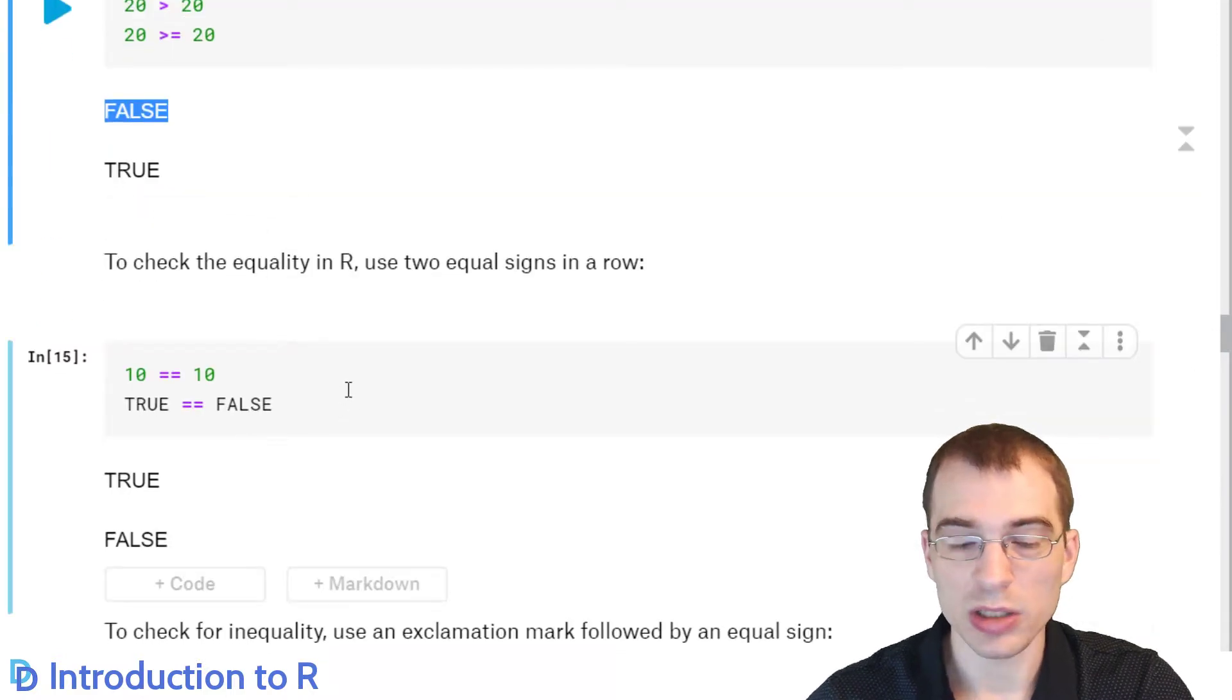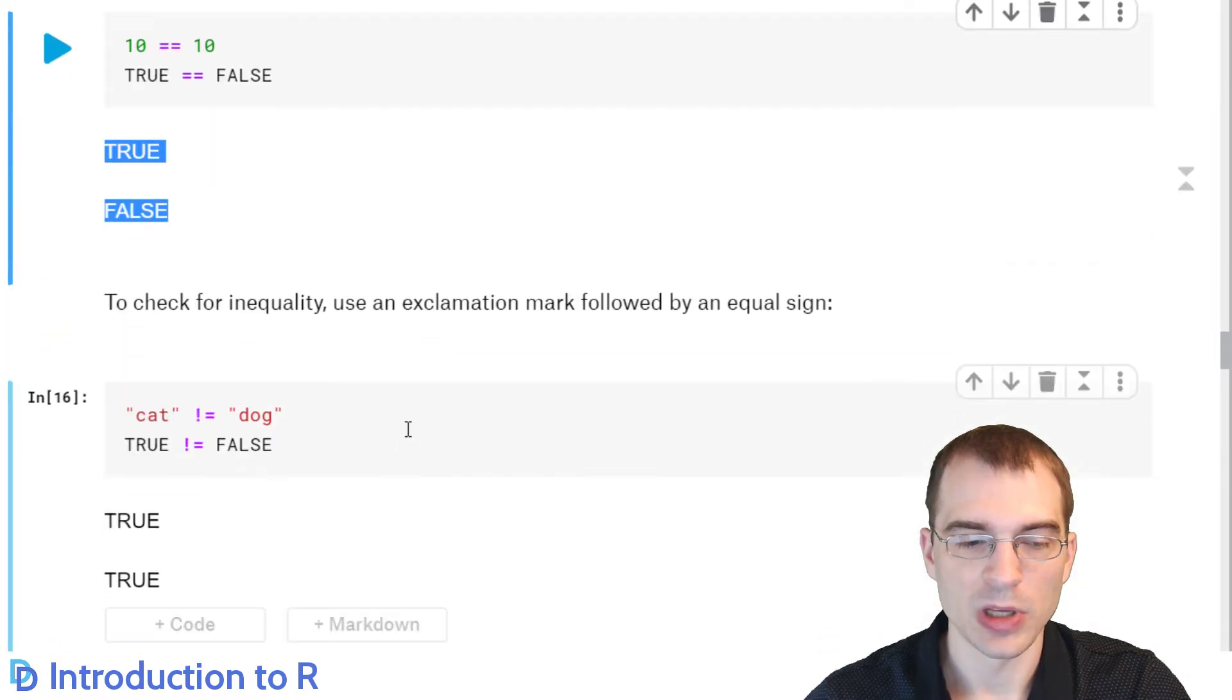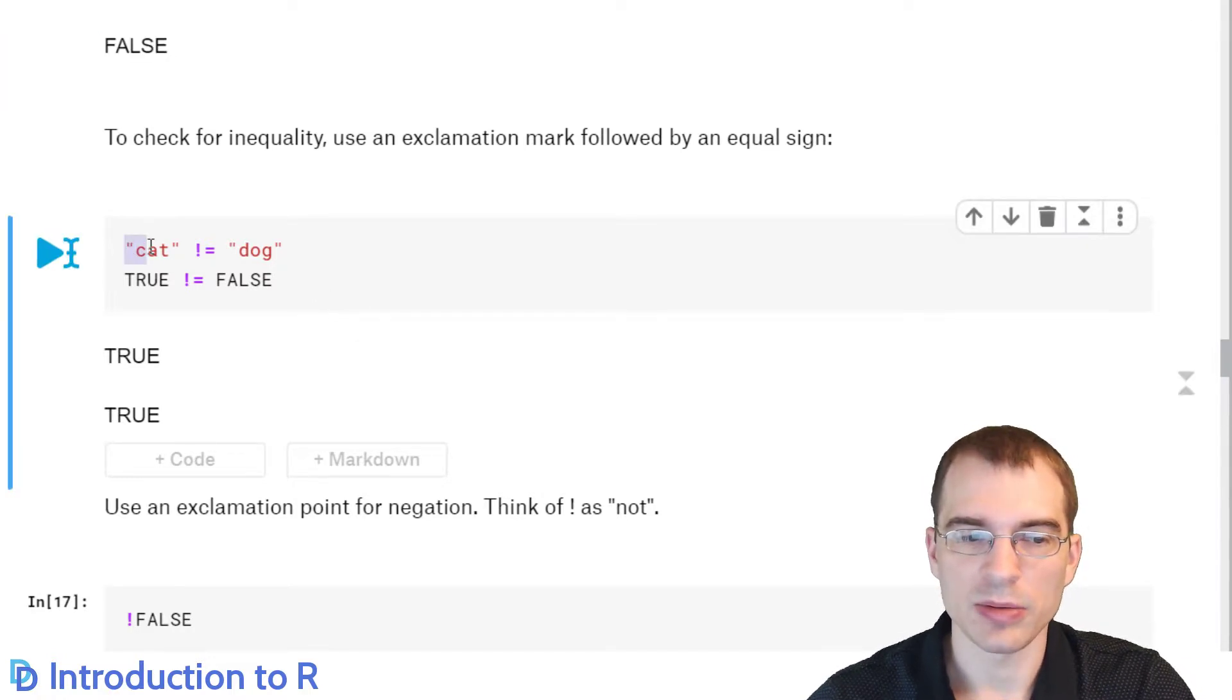Now to check equality in R, you use the double equals sign. So here we're saying 10 is equal to 10. That is true. Here we're saying true is equal to false. That is false. So when we run that, we get those results. Now to check inequality, you use an exclamation point followed by an equal sign. So right here we're saying this string here, cat, is not equal to the string dog. Here we're saying true is not equal to false. Both of those statements are true. So when we run that, the output shows true for both of them.